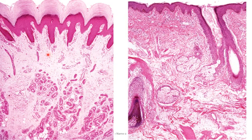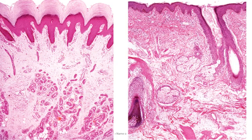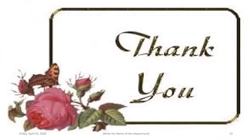Here we have a histological section comparing thick and thin skin. In the thick skin section you can notice the very thick stratum corneum and numerous sweat glands. In the thin skin section the stratum corneum is very thin, and you can identify hair follicles, sebaceous glands — which are absent in thick skin.